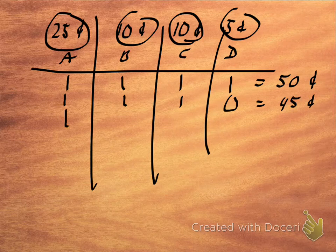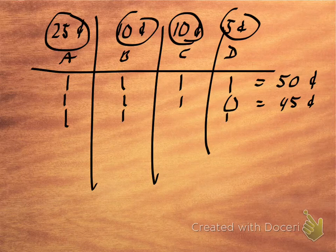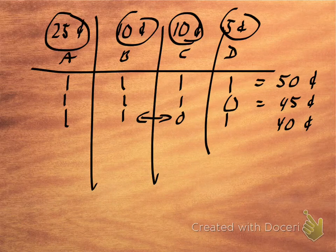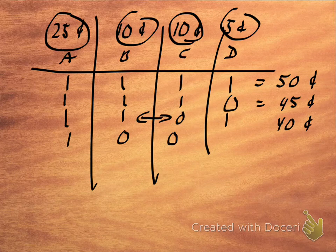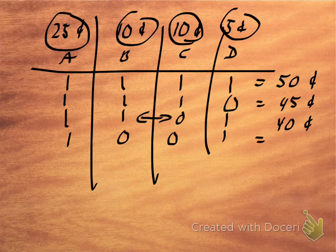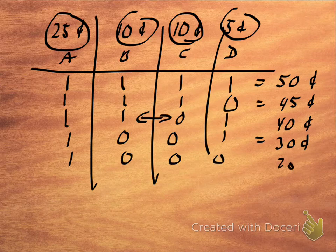The next best that I could do is I could have one of the dimes and the nickel. And that adds up to 40 cents. It doesn't really matter which one. These are interchangeable if I'm only going to have one dime. Finally, I could have no dimes and a nickel, and that would equal 30 cents. I could have just the quarter, and that would be 25 cents.